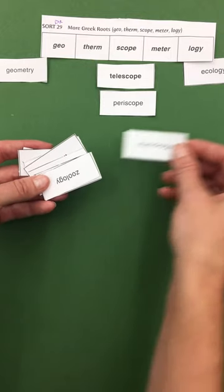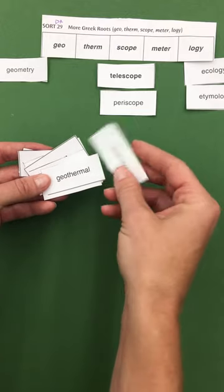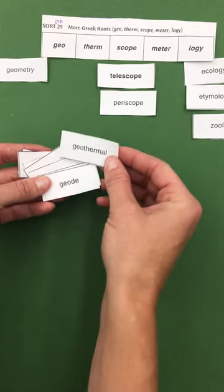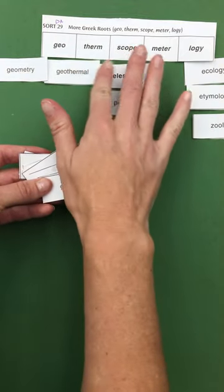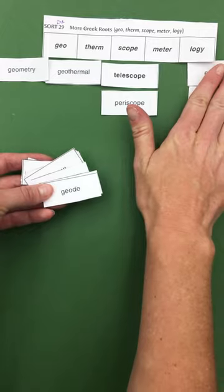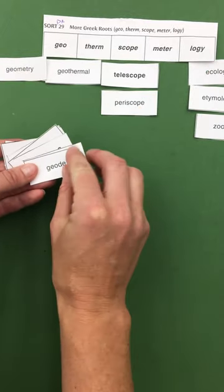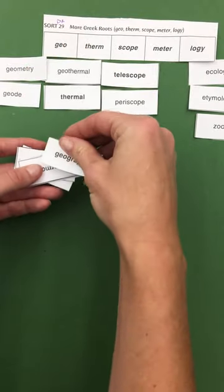Etymology. Oh, that's an interesting word. Zoology. Geothermal. So this could go in either place. I'm just going to put it right here. It could go in geo or it could go in therm. Geode. Thermal. Geography.